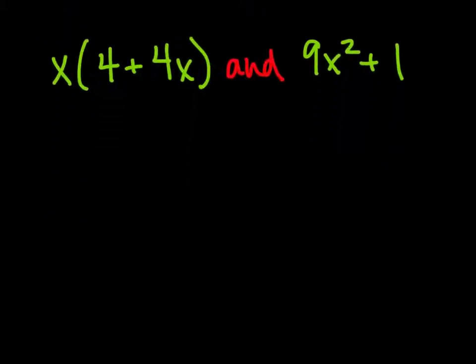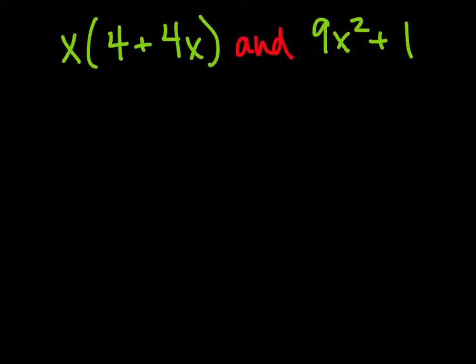One last one. This one's a little more tricky. So if you're getting confused already, you might want to just pause and understand what we have going on so far. In this one, we have x(4 + 4x).